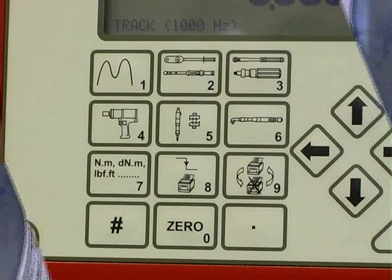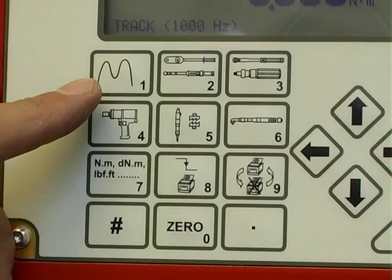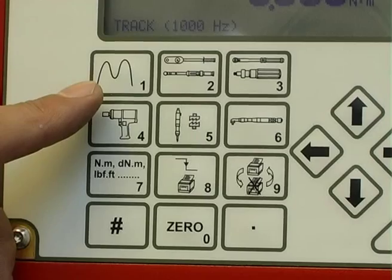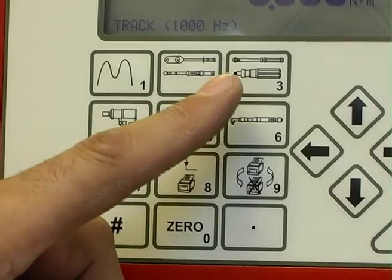The TTT Torque Tool Tester display buttons select the following functions: 1. Track mode, 2. Dial and electronic, 3. Click and cam.